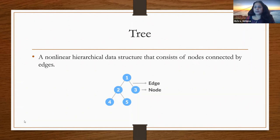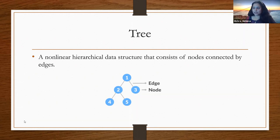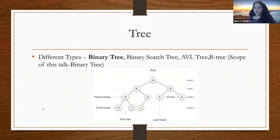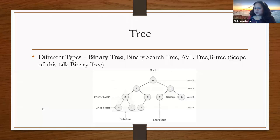Moving on to trees. Trees are another nonlinear data structure — a hierarchical data structure made of edges and nodes. As we'll see, a tree is actually a kind of graph. There are different types of trees: binary tree, binary search tree, B-trees, AVL trees, and red-black trees, just to name a few. We'll keep the scope of today's session to binary trees.